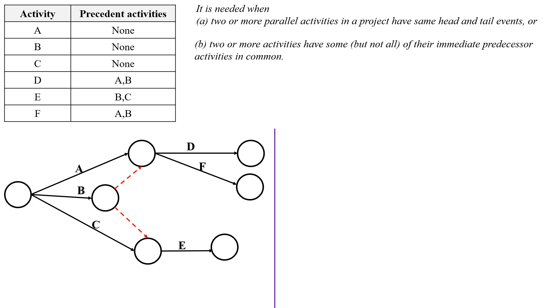According to the rule of network diagram, the network diagram should have only one tail event. So merge the activities D, E, and F at one event like this.